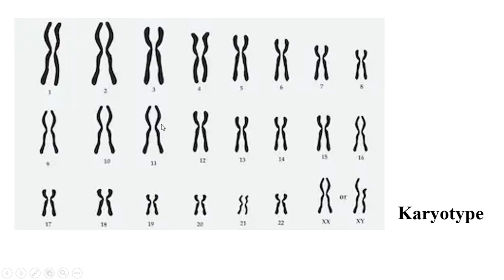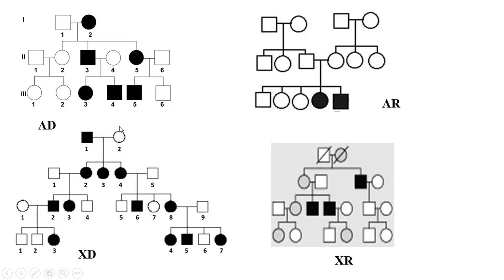We know that in humans every cell has 23 pairs of chromosomes, from 1 to 22 they are autosomes, and the 23rd is the sex chromosome — either XX in females or XY in males. X-linked diseases affect the X chromosome. There are four main types of inheritance: autosomal dominant, autosomal recessive, X-linked dominant, and X-linked recessive. In this lecture I will concentrate on X-linked recessive.